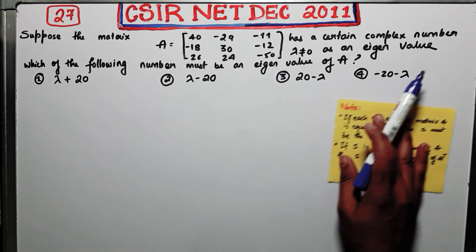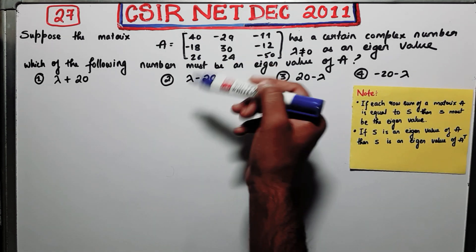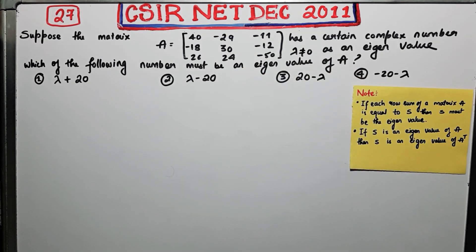That means from this what you can conclude, that if each column sum is equal, then also that number is an eigenvalue of A. You are getting my point or not.